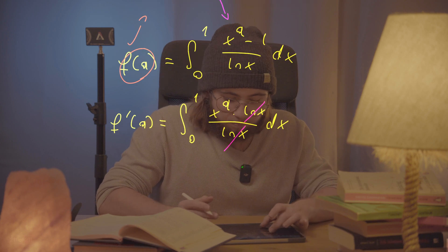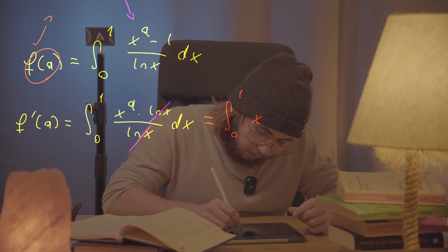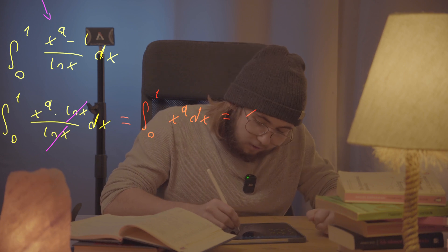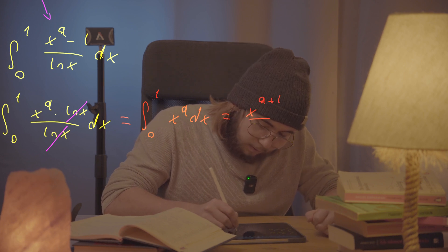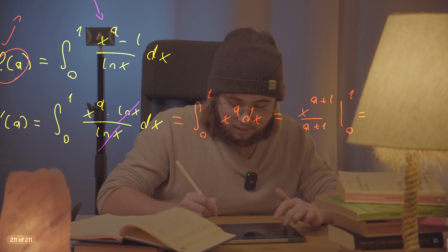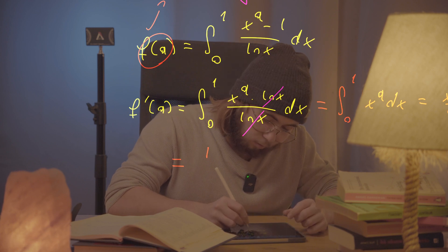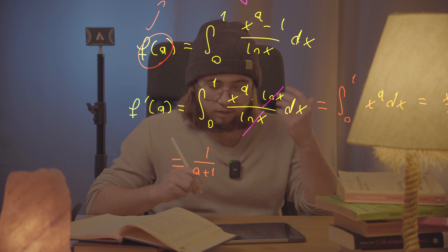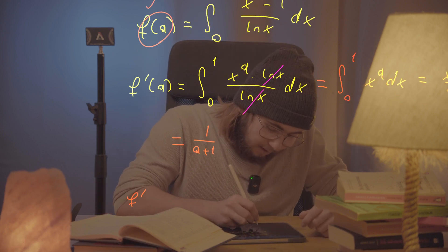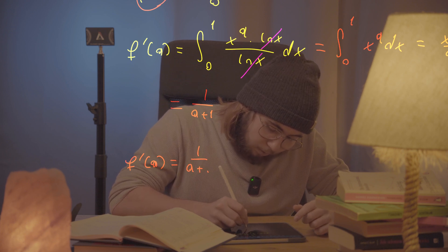So what is the integral from zero to one of x to the power of a dx? That's just x to the power of (a+1) divided by (a+1), evaluated from zero to one. Plugging in, we get that f'(a) is equal to one over (a+1). That's surely awesome.